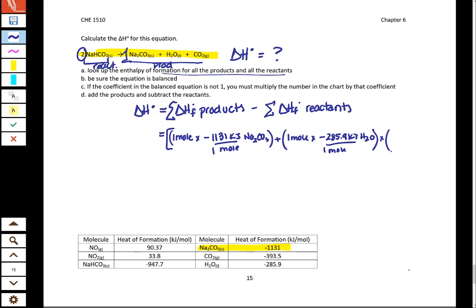I'm already starting to run out of space, so let's see if we can fit this in here. That for carbon dioxide, we have one mole and negative 393.5 kilojoules per one mole of carbon dioxide.